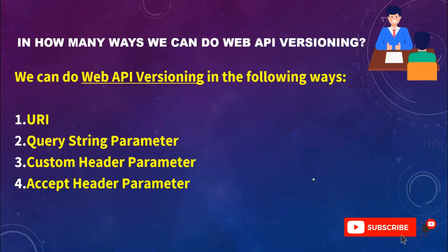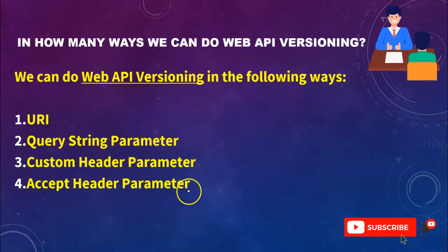In how many ways can we do Web API versioning? We can do Web API versioning in four ways: by URI, query string parameters, custom header parameter, and accept header parameter.